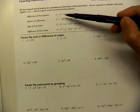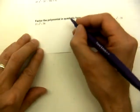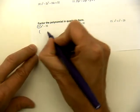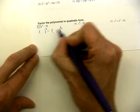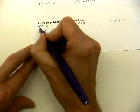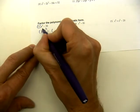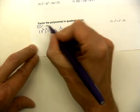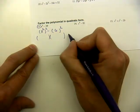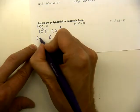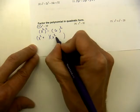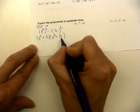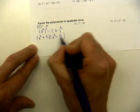Let's do number 13 as an example. We have x to the fourth minus 36. The trick is to set this up as something squared minus something squared. We can rewrite x to the fourth as x squared, squared — since 2 times 2 is 4. And 36 is 6 squared. Factoring into the pattern, x squared goes in front, one gets the positive, one gets the minus, and 6 goes in the back. x squared is a perfect square, but 6 is not, so it does not factor further.